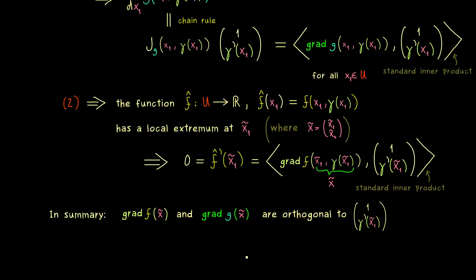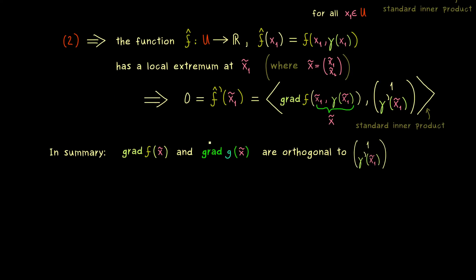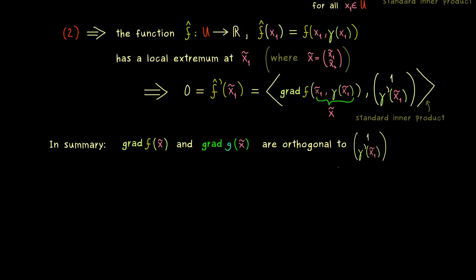And since everything here lives in R² we don't have much choice for the two gradients. So if we visualize this vector with γ', then we immediately see that the orthogonal complement of this vector is a one-dimensional subspace in R². So the gradient of f and the gradient of g have to lie inside this one-dimensional subspace, which finishes our proof. Both gradients here only differ by a Lagrange multiplier λ. And with that we have it.